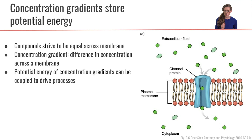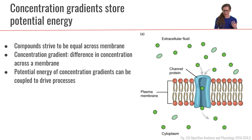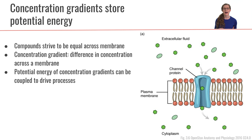Glucose can't just travel across the phospholipid bilayer by itself. Compounds strive to have an equal concentration across both sides of the membrane — they always strive for equilibrium. When we have different concentrations of solutes on different sides of the membrane, that is actually a form of potential energy, and we can use that potential energy to drive other types of chemical reactions.